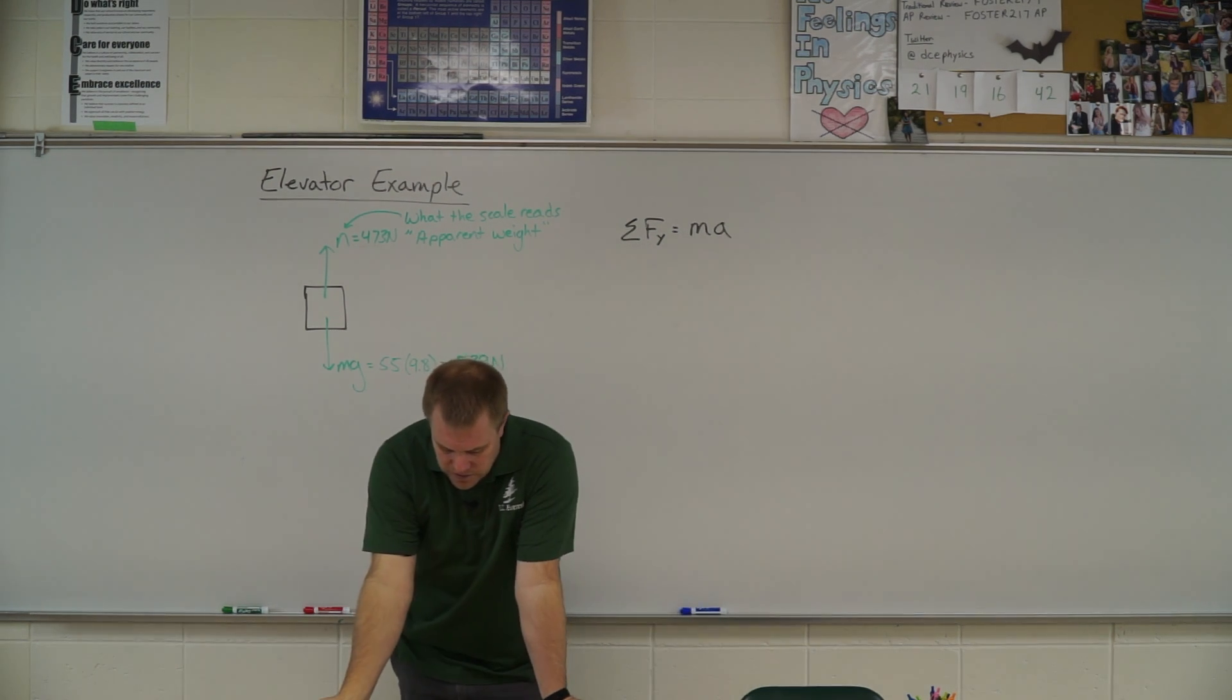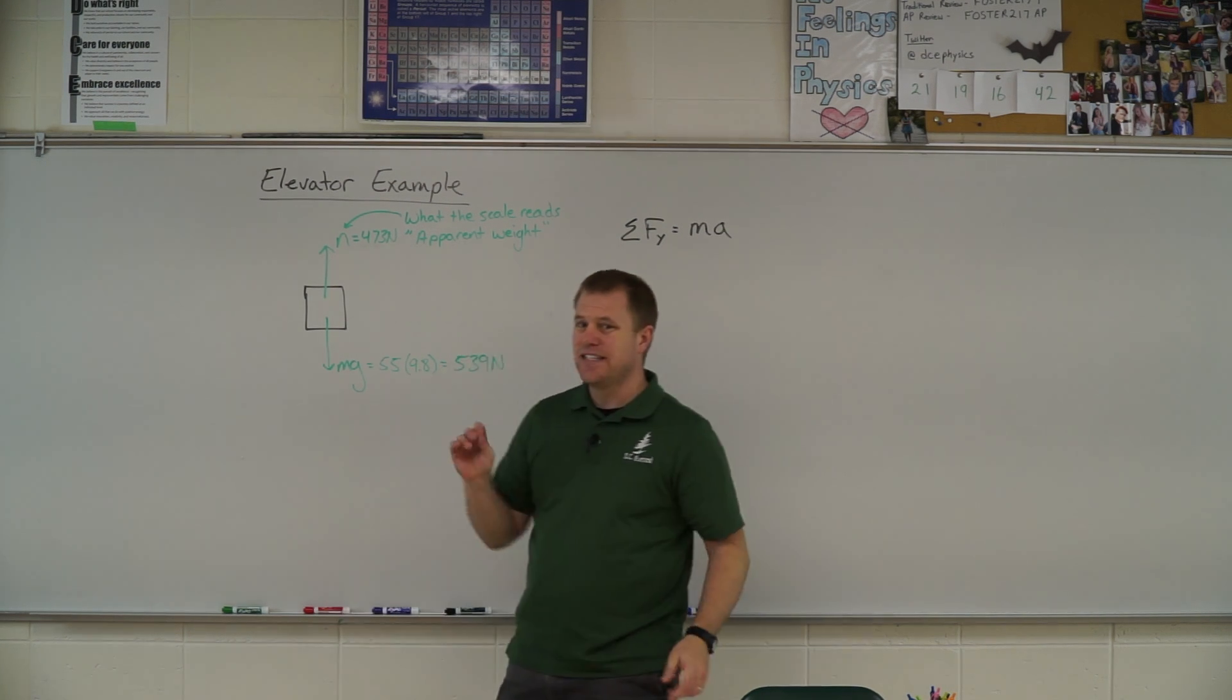So in our problem here, it says a 55 kilogram person is riding in an elevator and standing on a scale. The scale reads 473 Newtons. Explain what the elevator is doing.